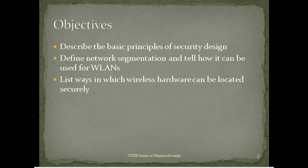One objective is to describe ways in which wireless hardware can be located securely — you don't want users to be able to reach it. We put in a wireless room one time and didn't quite get the access point out of reach of the students. When an individual had a problem connecting, they decided to just reset the access point. Once you reset it, it goes back to defaults and no longer works on the network. We had to reconfigure it and put it in a more secure location — out of sight, out of mind — locked away where users could no longer interfere.